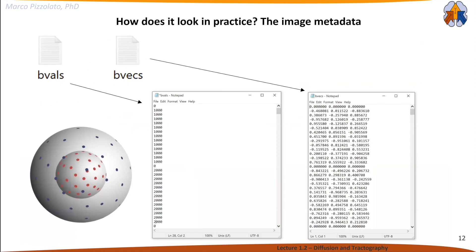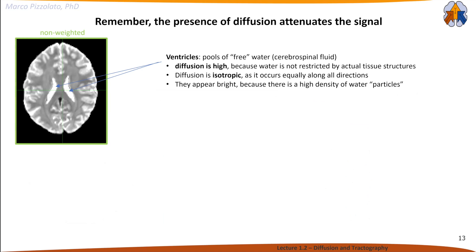In practice, we have b-values and b-vectors in text files. We have zero (no weighting), then one thousand and two thousand, with corresponding directions. These are often referred to as shells—the red shell and the blue shell. Some techniques use only one shell like diffusion tensor imaging, while others require multiple shells.